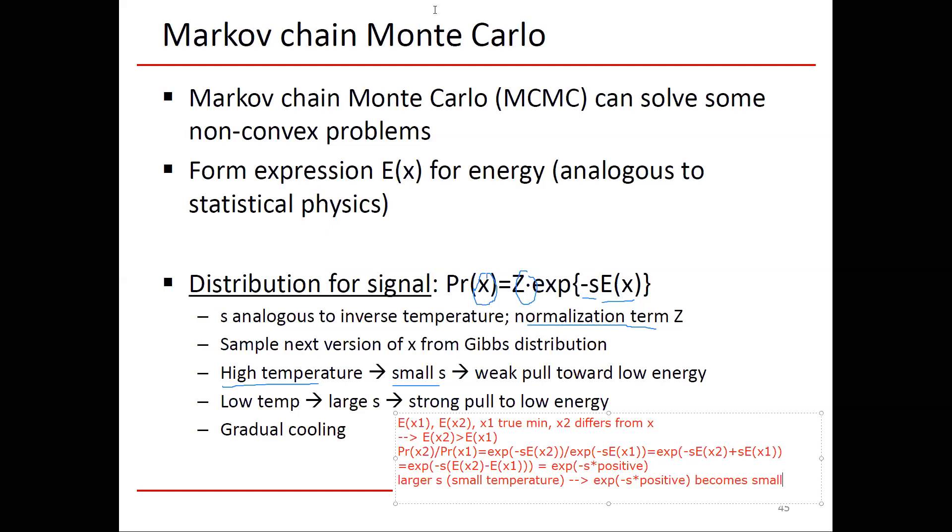We're using this distribution to make modifications in X2. In particular, the Gibbs distribution is looking at one location in a sequence X. X is multi-dimensional, so we have one entry in X. We're taking the marginal distribution over just that location. Everything else is frozen. We're sampling from the Gibbs distribution.